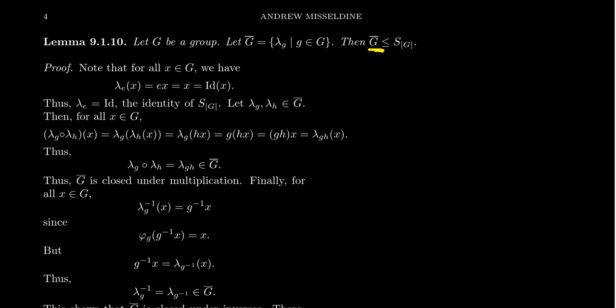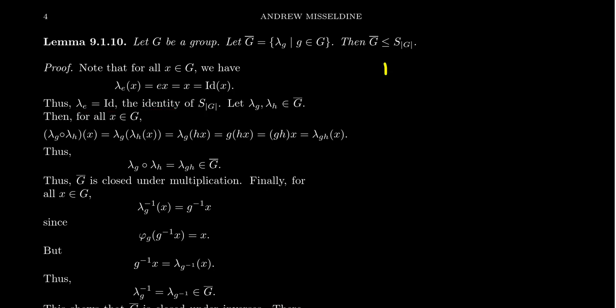To prove G-bar is a subgroup, we need to show it has an identity, is closed under multiplication, and is closed under inverses. For the identity: G has an identity element e, so consider λ_e. Left translation by e gives λ_e(x) = ex = x — that's just the identity map. So λ_e is the identity permutation, and G-bar has an identity.